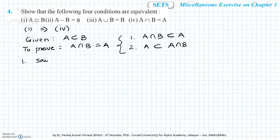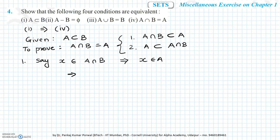To prove the first statement, we say x belongs to A intersection B. From this it is obvious that x will also belong to A, because that is required for x to belong to A intersection B. So this is straightforward — we can say A intersection B is a subset of A.